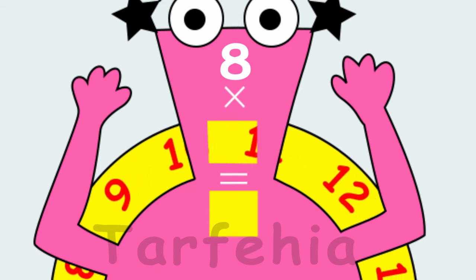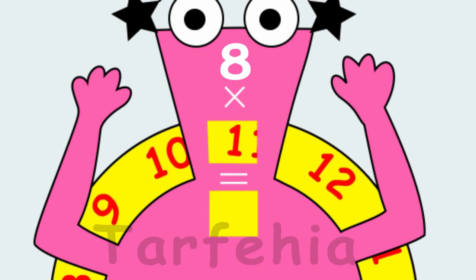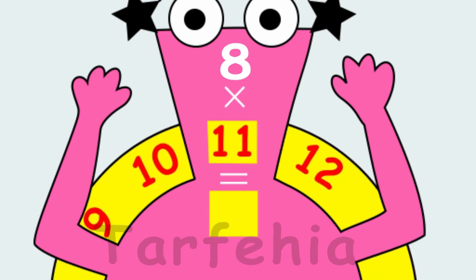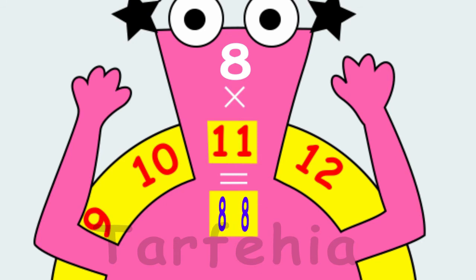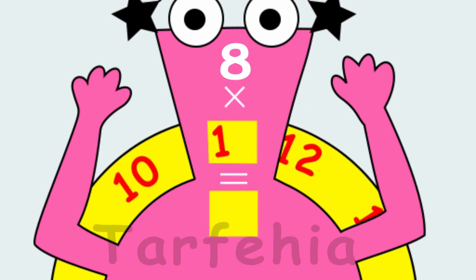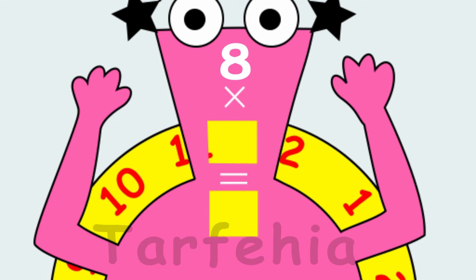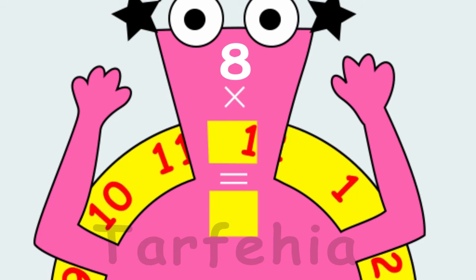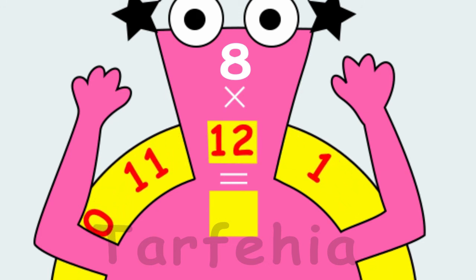8 times 11 equals 88. 8 times 12 equals 96.